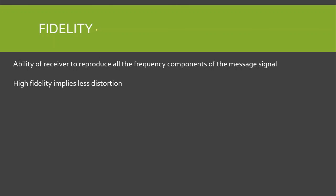Fidelity actually means faithfulness or loyalness. Fidelity is the measure of the ability of the receiver to reproduce all the frequency components of the message signal — which in a receiver is basically the audio signal transmitted by the transmitter. High fidelity means the receiver reproduces all frequency components without eliminating any, resulting in no distortion. So high fidelity implies less distortion. These were the characteristics of a good receiver.